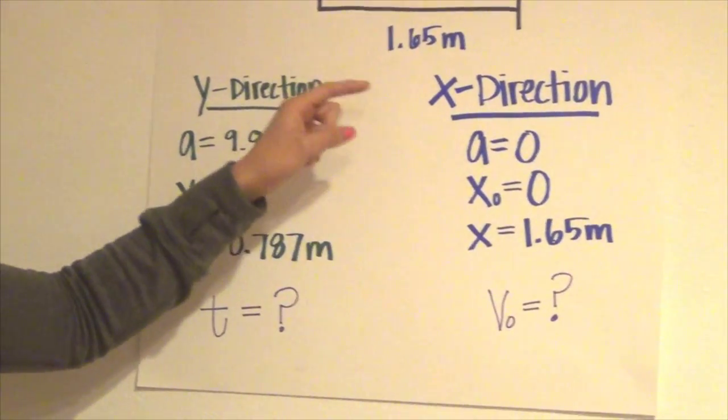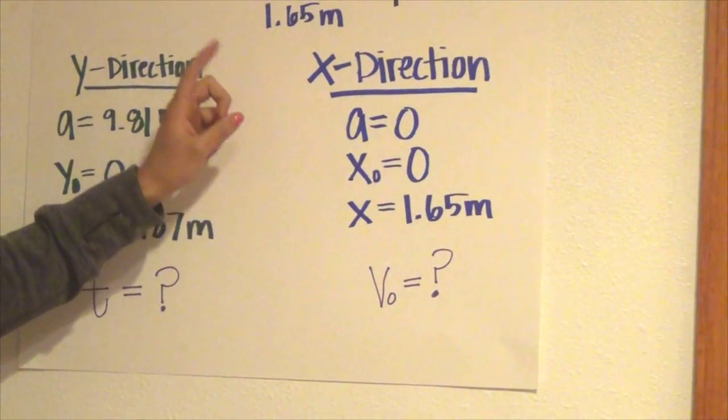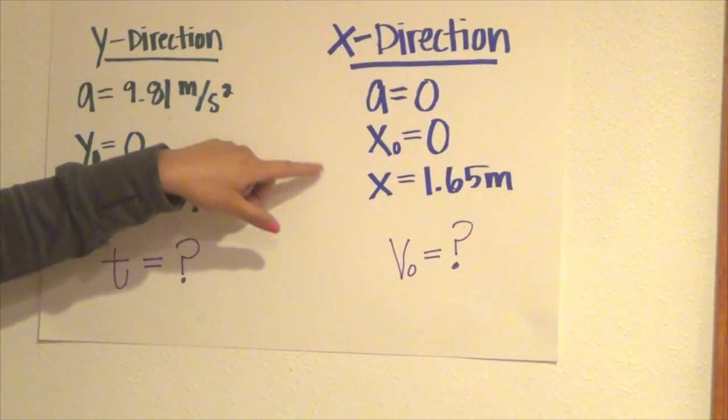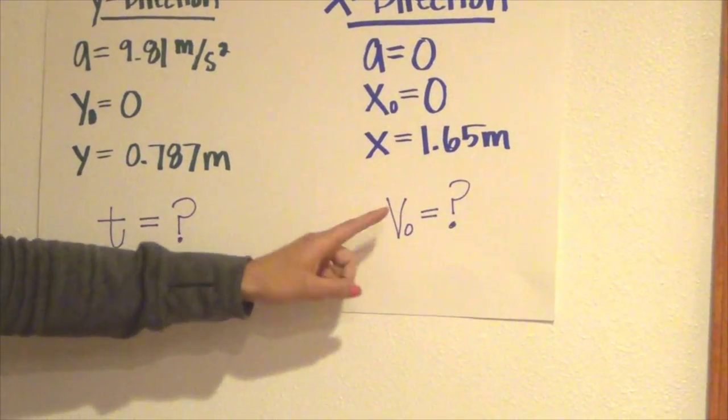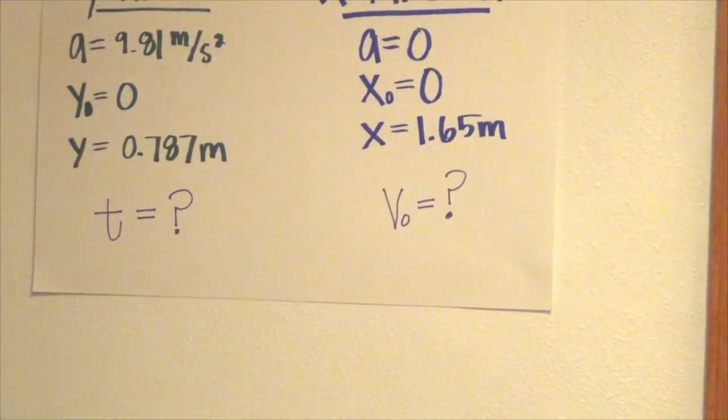In the x direction, a equals 0, x naught equals 0, and x equals 1.65 meters. We're going to solve for the velocity.